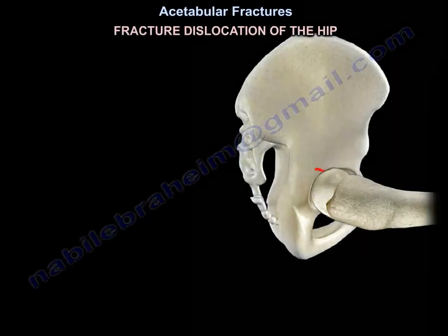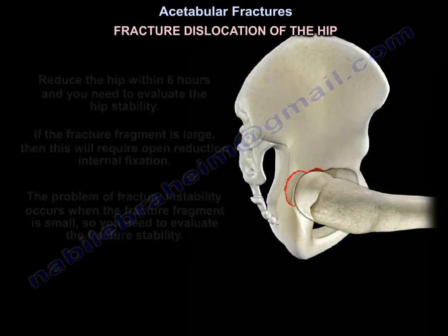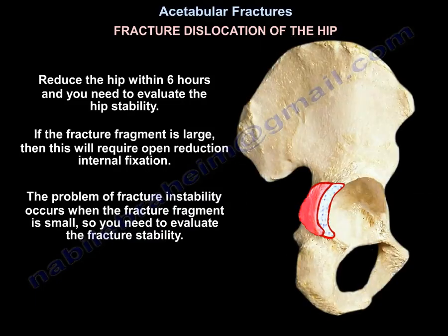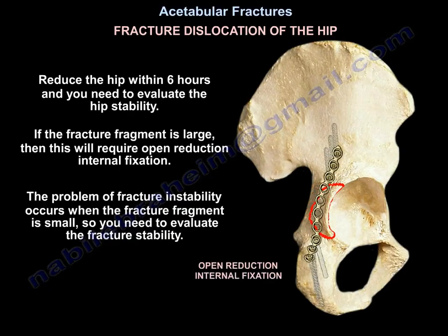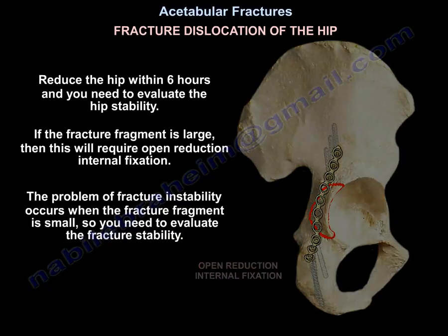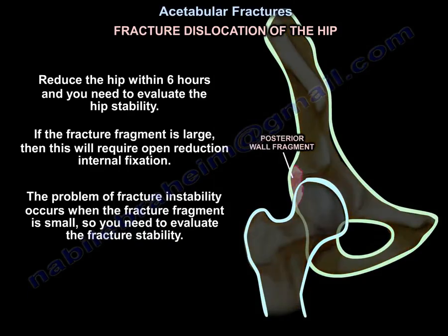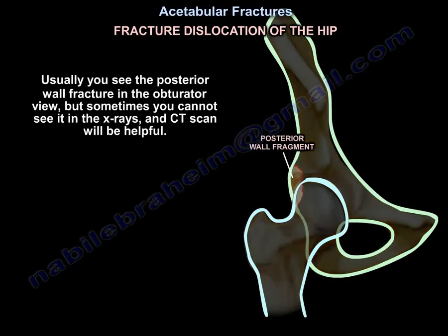In the scenario of fracture dislocation of the hip, you reduce the hip within 6 hours and then evaluate hip stability. If the fragment is large, open reduction internal fixation is needed. The problem arises when the fragment is small, requiring evaluation of hip stability. The posterior wall fracture is usually seen in the obturator view, but sometimes it's not visible on x-rays and CT scan will be helpful.